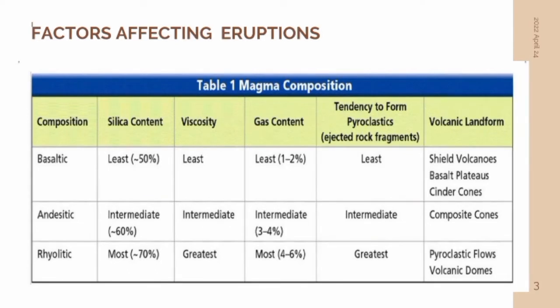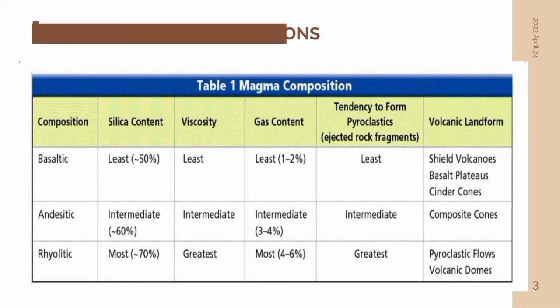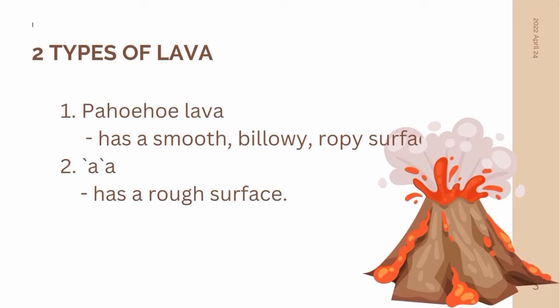Here is a table of the magma composition — a summary comparing how violent each composition is. We have three magma compositions: basaltic, andesitic, and rhyolitic. The table shows the silica content, viscosity, gas content, tendency to form pyroclastics or ejected rock fragments, and the volcanic landforms of each composition. If magma is high in silica, the higher the viscosity and the less the lava flows. If the silica level is lower, the lower the viscosity and the more easily the lava flows.